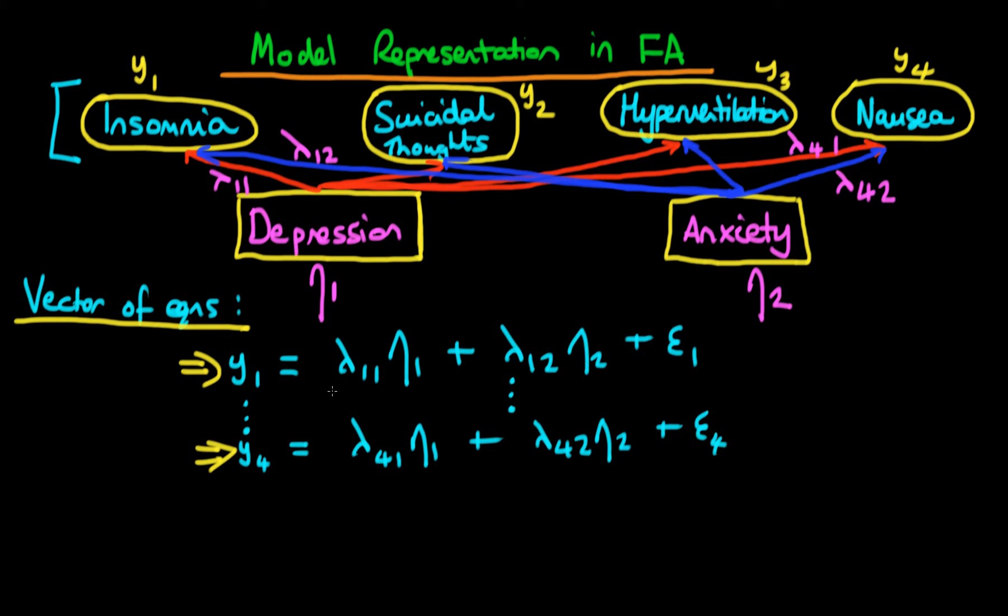The things that are fixed are the weightings of the unobserved factors on the observed characteristics. So that's in this case lambda 1 1, lambda 1 2, lambda 4 1 and lambda 4 2 as well as all the weightings in between.